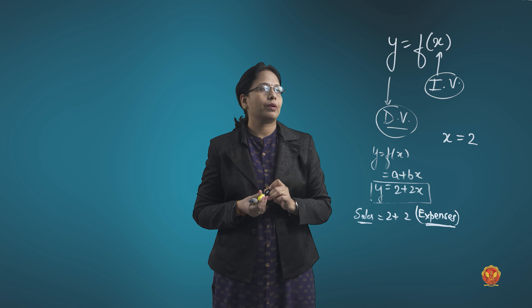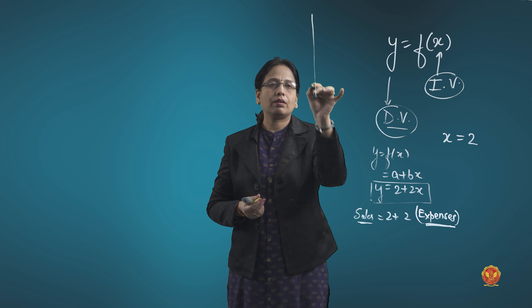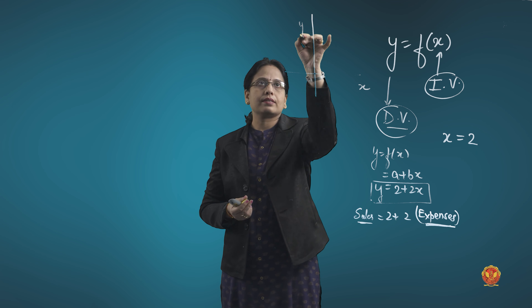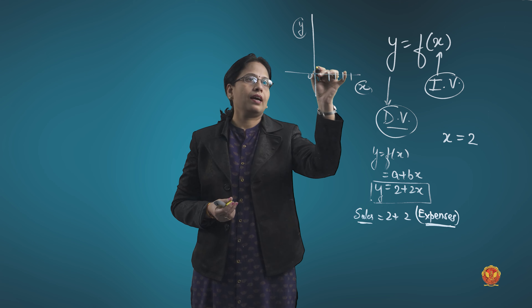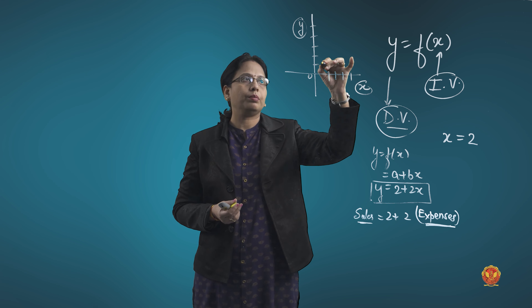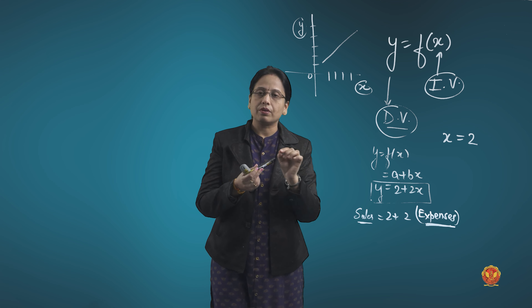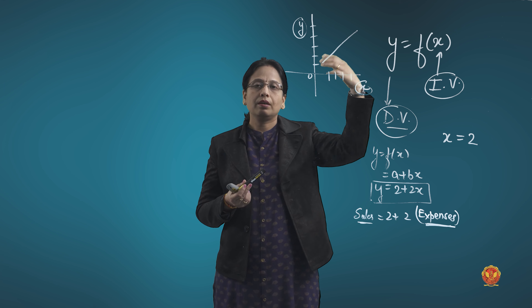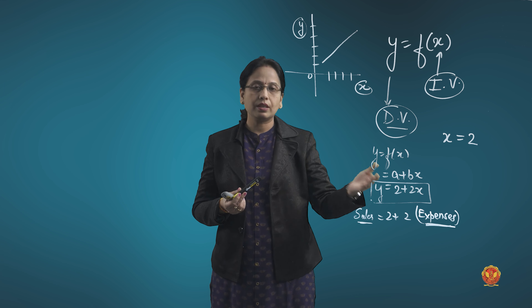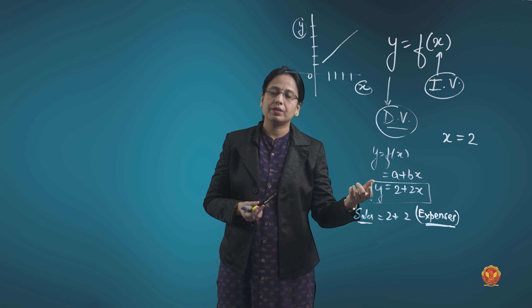One more important thing: y generally represents the dependent variable. When we draw the x-axis and y-axis, y depends upon x. For different values of x, I get different values of y and this line can be plotted on the graph. If we can create some relationship and create a trend line, it can help us find out predicted values for the future.